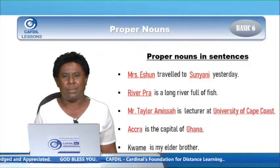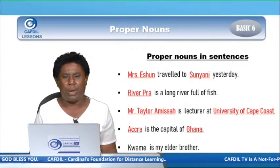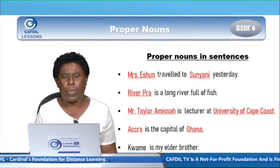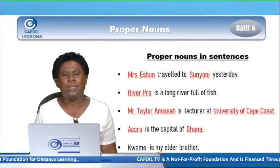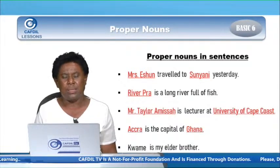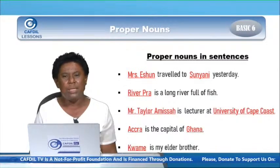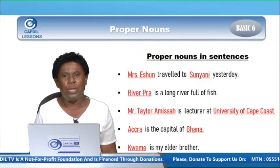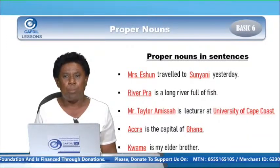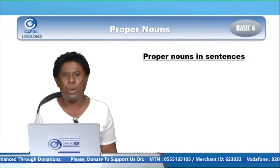Let's go to the next sentence: Kwame is my elder brother. Let's underline the proper noun in the sentence. Kwame — this name is a particular name given to a boy or a man, and it starts with capital K, because it's a proper noun.